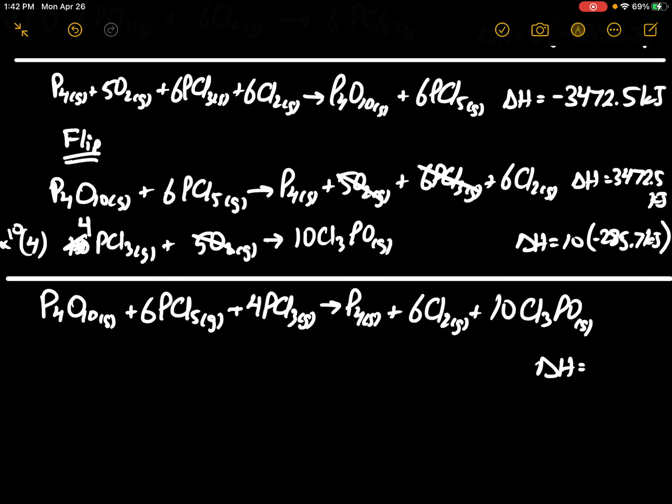P4, 6Cl2, 10Cl3PO gas. Delta H here is equal to minus 615.5 kilojoules.